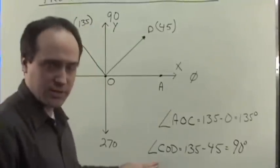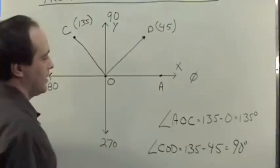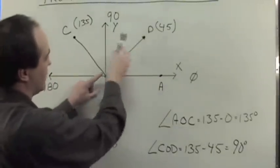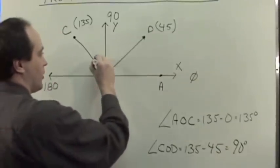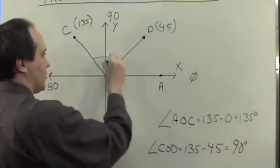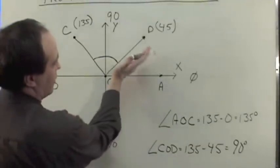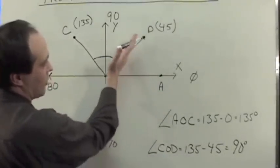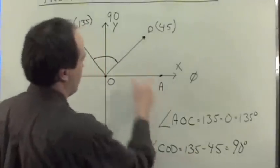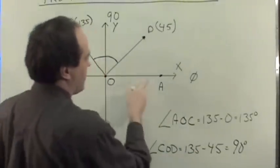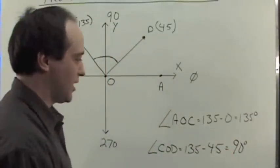And that makes more sense if we look down here. The angle COD—to find that is what's the angle of C minus what's the angle of D, because here what we're looking for is what's the angle right here in the middle. So the angle COD is 135, which is C, minus 45, which is D. And then you subtract those and we see that's a 90 degree angle.